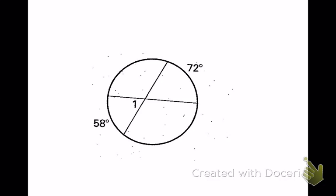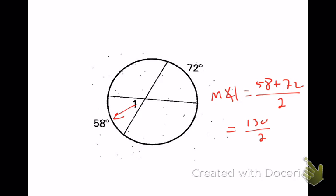Quick example of this theorem: we've got two chords that are crossing, not at the center as far as we can tell. The measure of angle 1 is simply the front arc, which is 58, plus the back arc, which is 72, divided by 2. This gives us 130 divided by 2, which is 65 degrees.